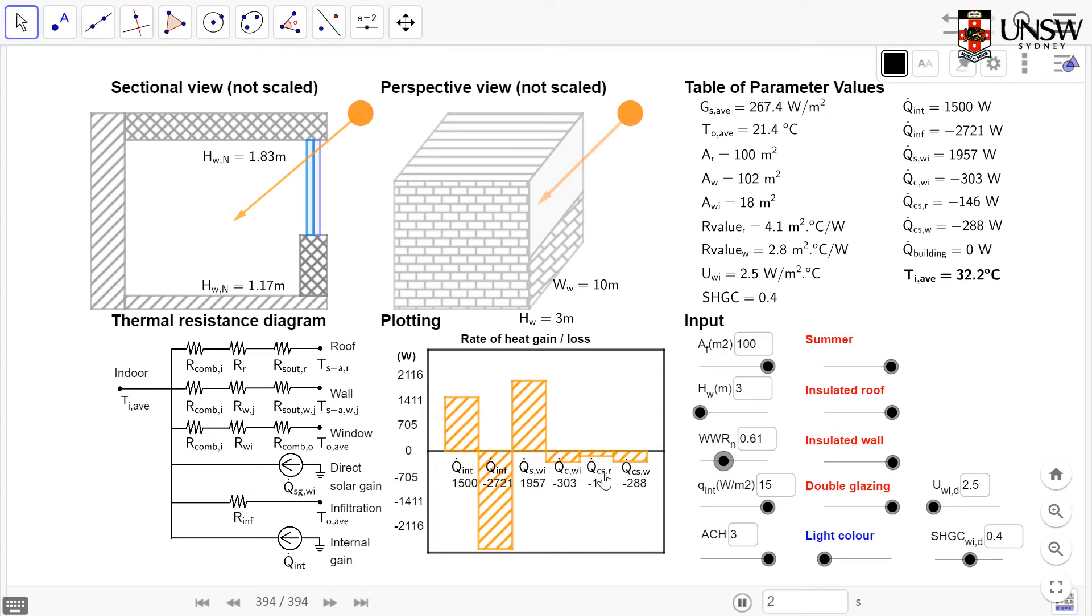We have our conduction losses from the roof, as well, which is significantly smaller due to higher insulation. You can see the R values up here as well for your roof. So the little subscript R is for your roof, little subscript W is for wall, and WI is for your window. And then you can also see your conduction losses through the walls, too.